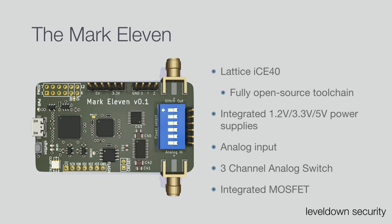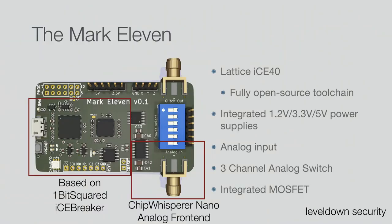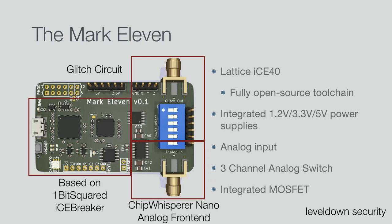The Mark 11 is based on existing open-source designs: the FPGA part is based on the 1BitSquared IceBreaker, the analog front end (thanks to Colin O'Flynn) is based on the ChipWhisperer Nano, and the glitch circuit is what we've been using on breadboards combined on a single device. Production takes longer than expected, but drop me a message on Twitter and I'll send you a PCB once they work. The BOM is around 50 dollars.